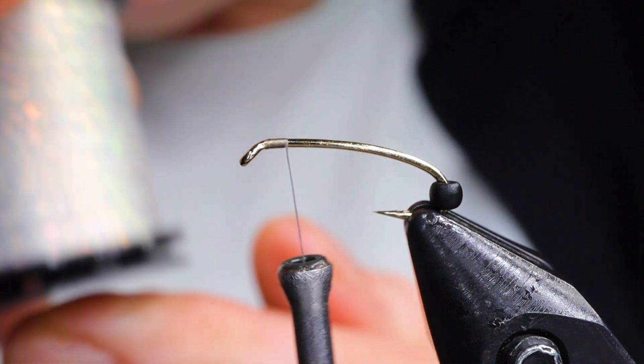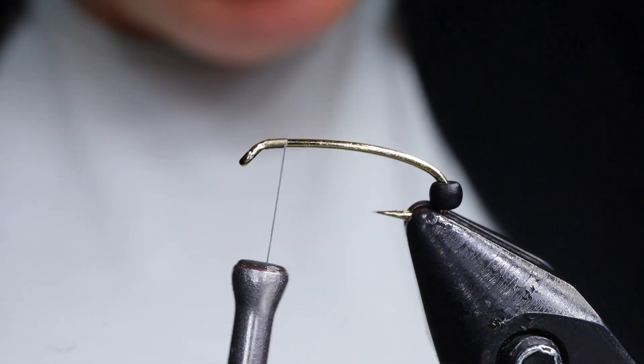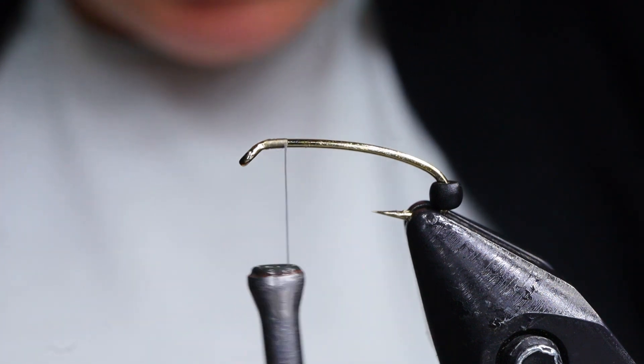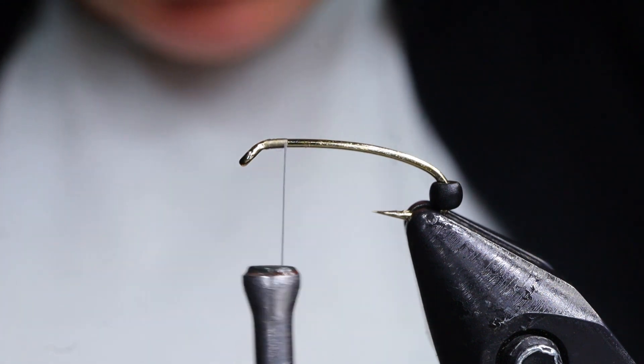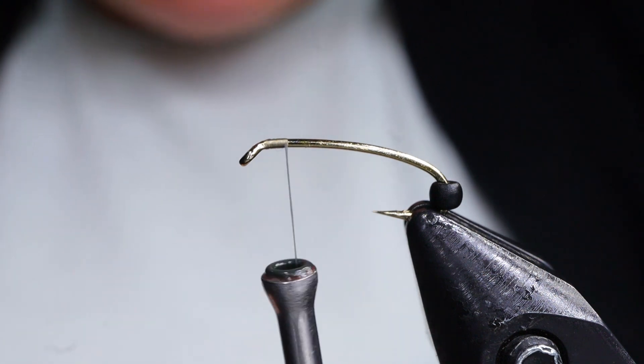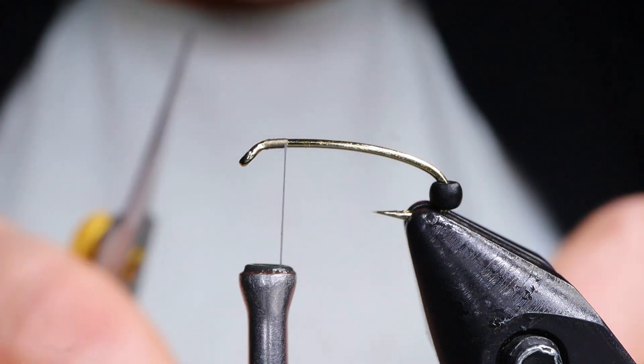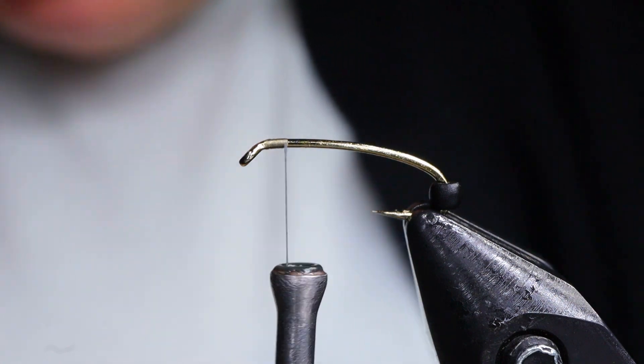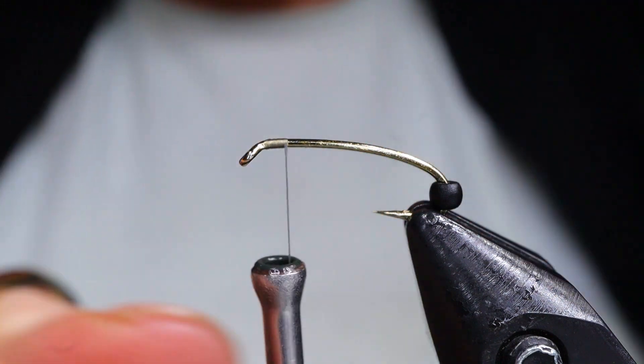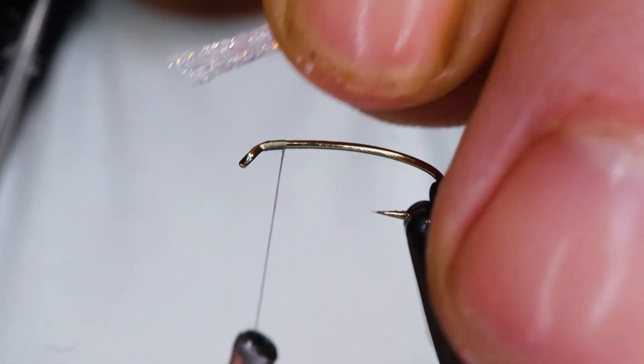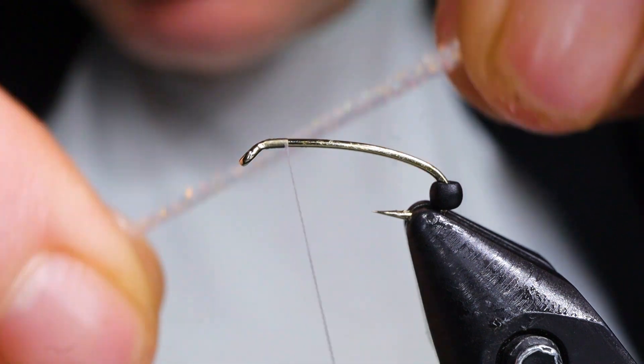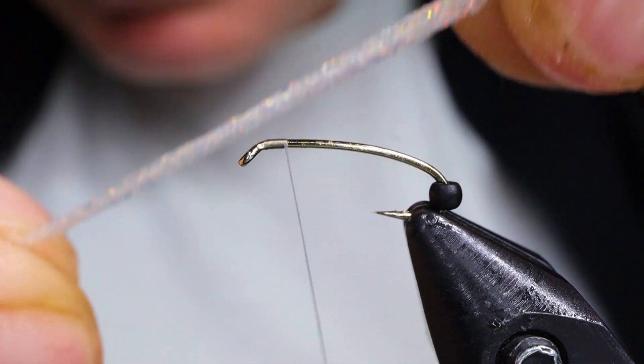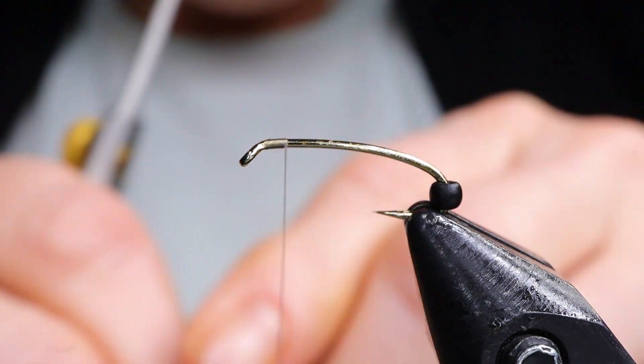And then next I've taken the Semperfly micro glint. You can see how it sparkles. But the reason I really like this stuff is because unlike uni, if you're fishing a lake in the summer that's full of algae, this stuff does not take on the green color. So I've just taken about eight strands of the micro glint. I sort of wrapped it around my fingers four times and cut it in half.